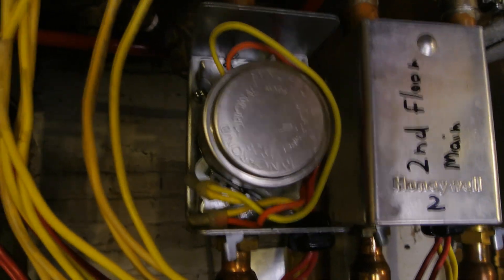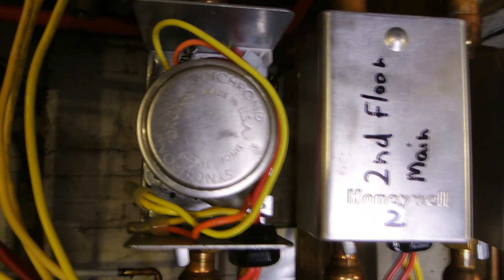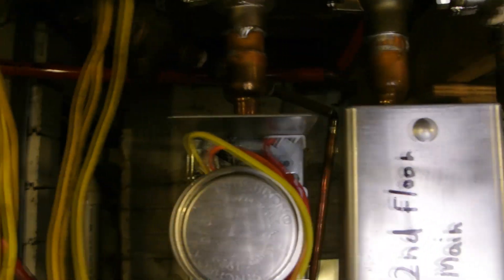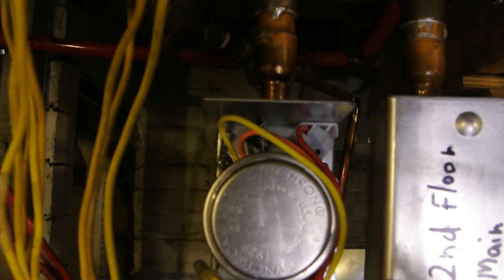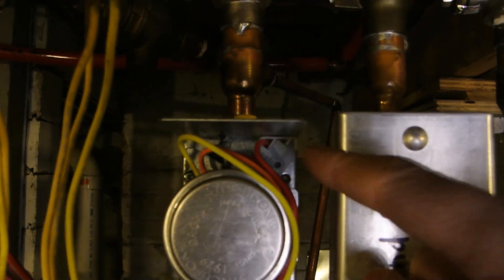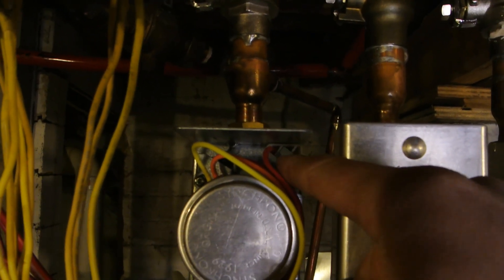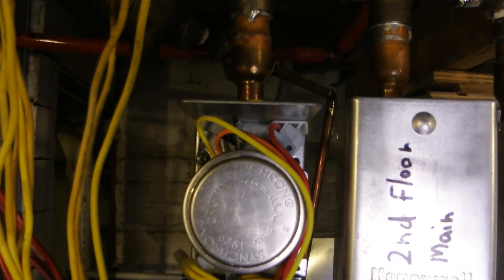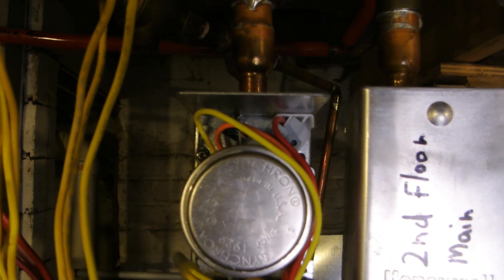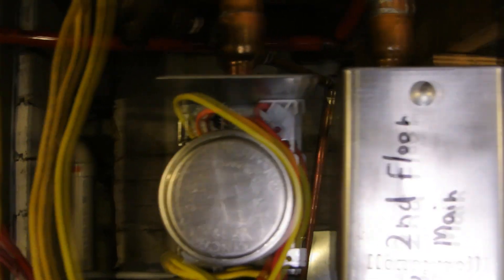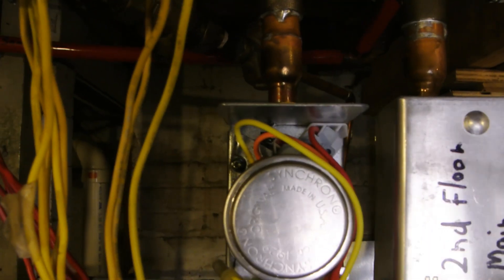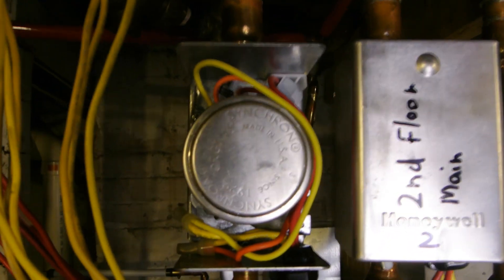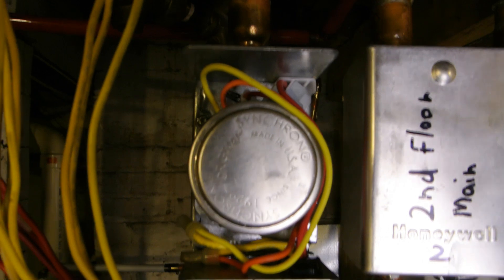It keeps the valve open and allows water to flow through. Another part of the valve, the third part, is this end switch. It's a micro switch, essentially like a light switch except it's spring-loaded. It clicks when it turns on. When it's turned on, it completes a circuit as well, which tells the boiler to turn on. They call that an end switch.